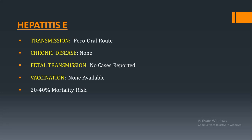Hepatitis E: transmission is by the fecal-oral route, there is no chronic disease, no cases of fetal transmission are reported, and no vaccination is available. Hepatitis E is more likely to lead to fulminant hepatic failure in pregnancy — it is the most dangerous hepatitis if it occurs in pregnancy. It is more common in primigravida and in the third trimester. In underdeveloped countries, 20% of women infected in the third trimester die of fulminant hepatitis, giving a 20 to 40% mortality risk. Sometimes in hepatitis E there is a need for termination of pregnancy to save the life of the mother.